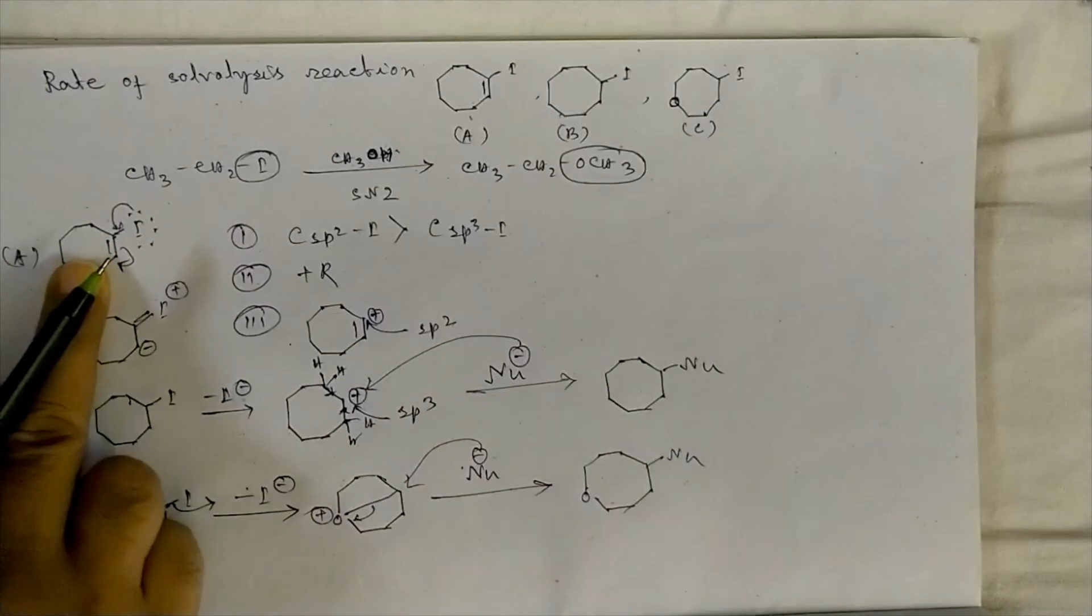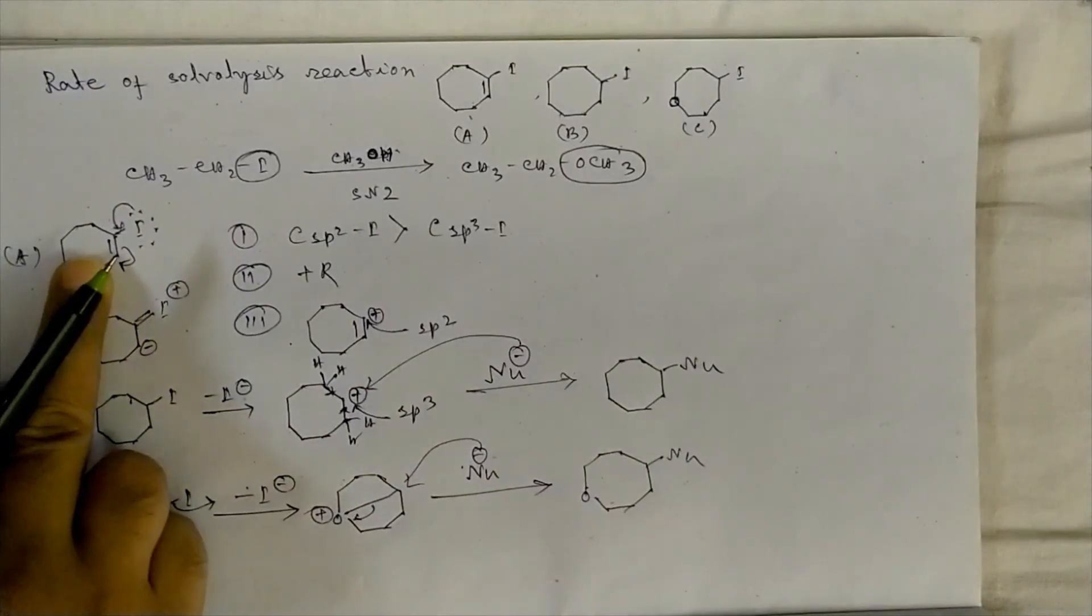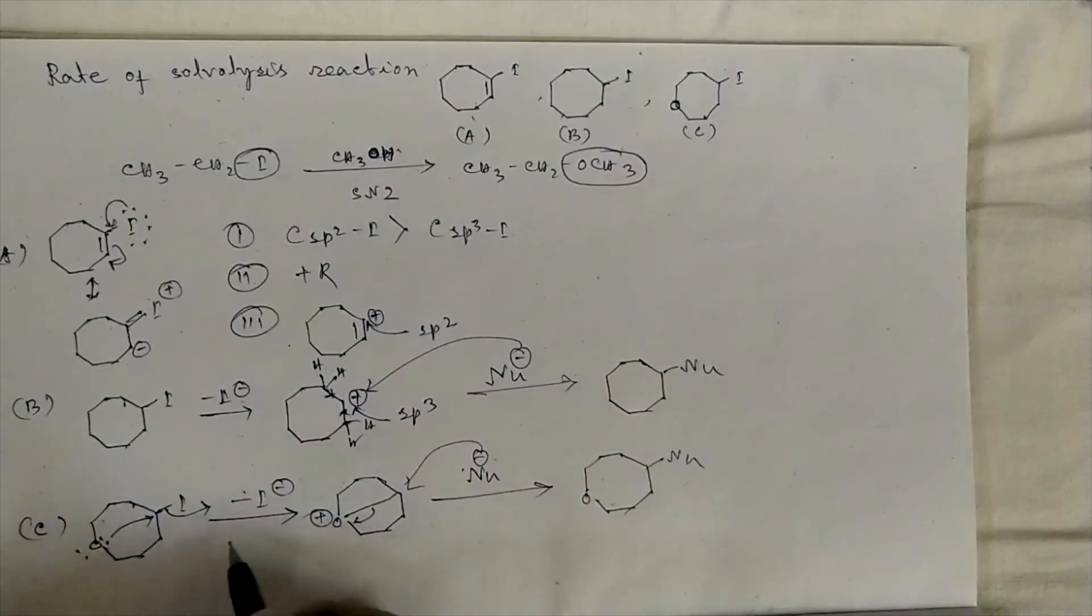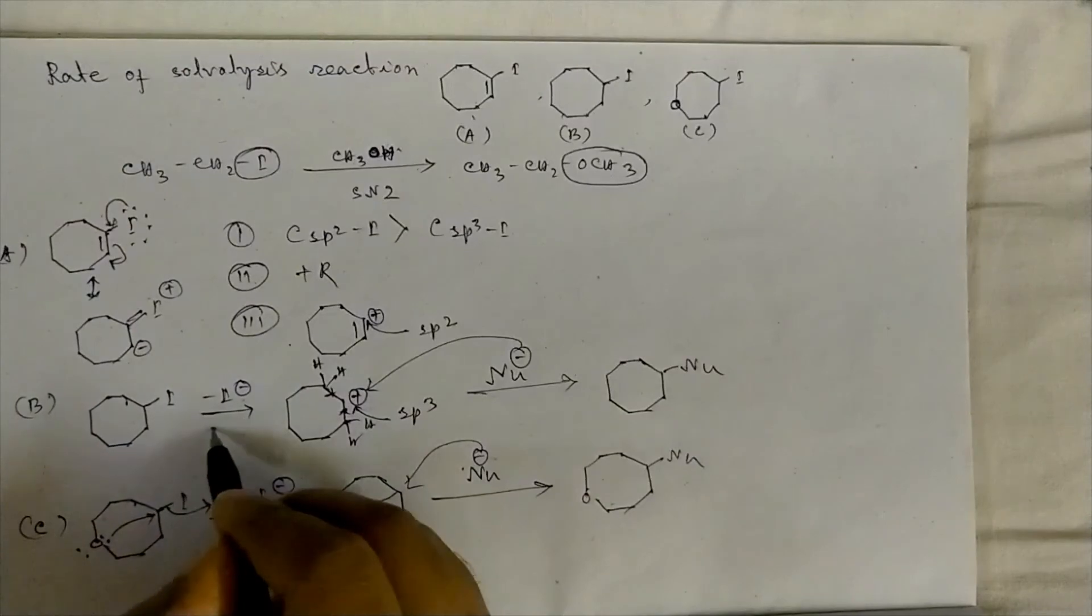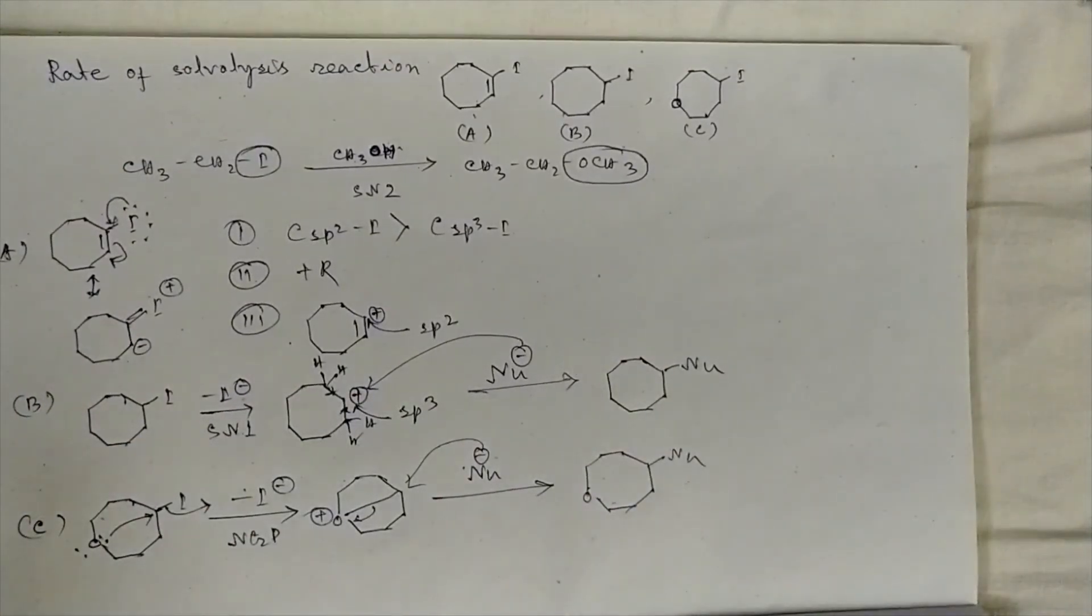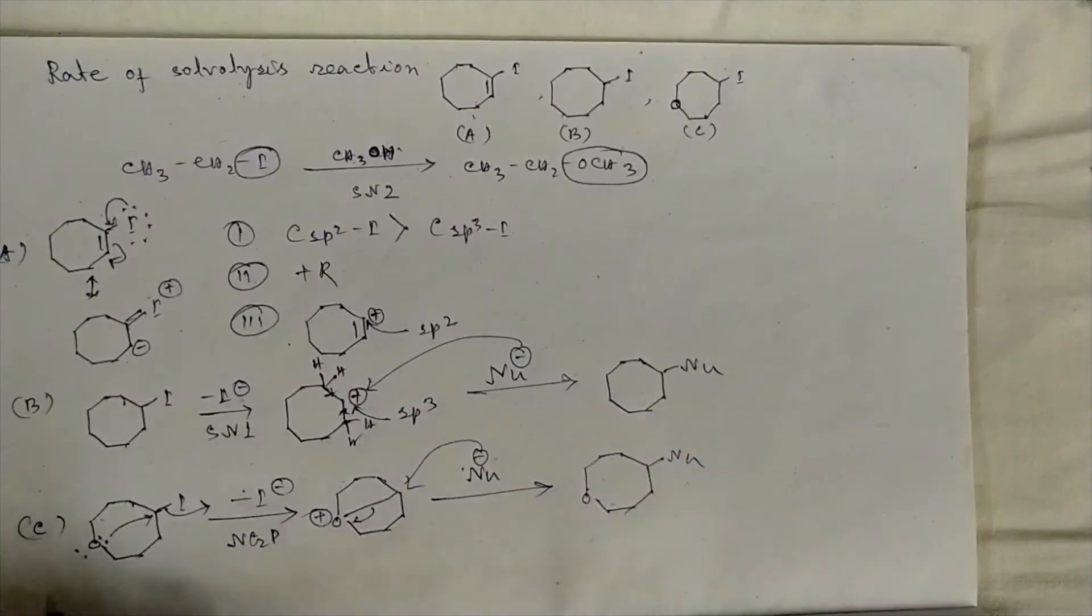But this substrate will not undergo solvolysis reaction directly. This mechanism is called NGP, neighboring group participation. It follows SN1 mechanism because 2° carbocation has some stability. So the rate will be